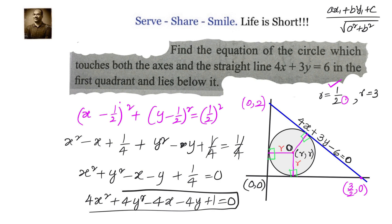This is the equation of the circle which touches both the axes, lies in the first quadrant, and is below the given line 4x plus 3y minus 6 equals to 0. To recap: whenever a circle touches both coordinate axes, the centre is r comma r since both horizontal and vertical distances equal r. Using the perpendicular distance condition, we calculated two values for r: 1 by 2 and 3. Since r equals 3 places the circle above the line, we take r equals 1 by 2.